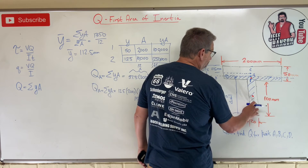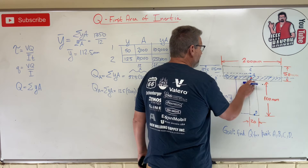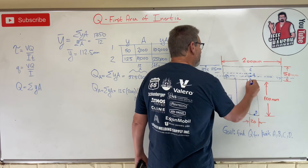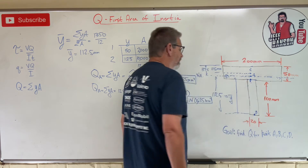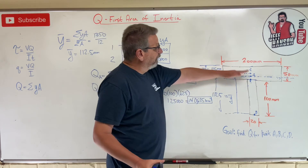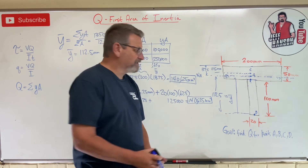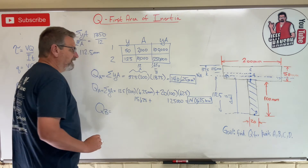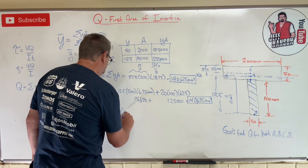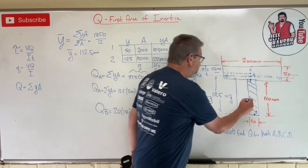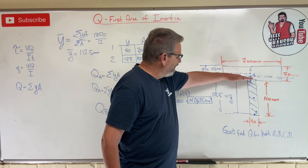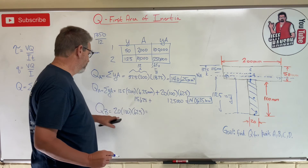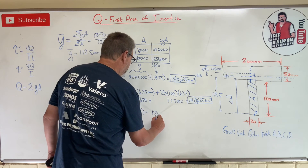Now let's find Q at point B, which is right at the bottom of the flange, below the neutral axis. The area below point B is just the full bottom web: 20mm by 100mm. The centroid of that piece is 12.5 plus 50 = 62.5mm from the neutral axis. So Q at B equals 20 × 100 × 62.5 = 125,000 mm³. Notice this is less than Q at the neutral axis — makes sense.